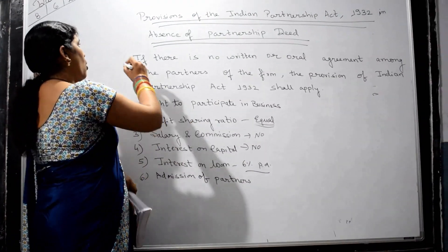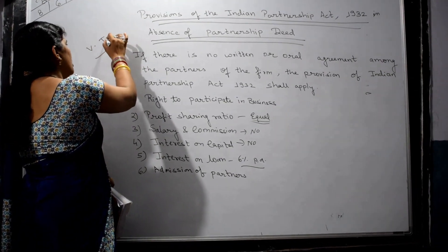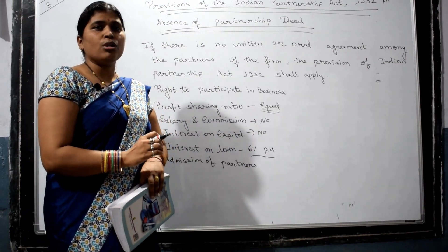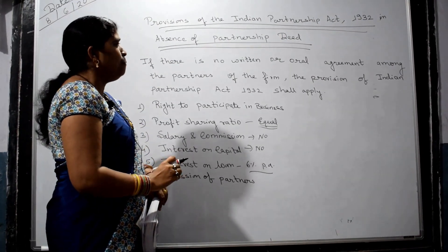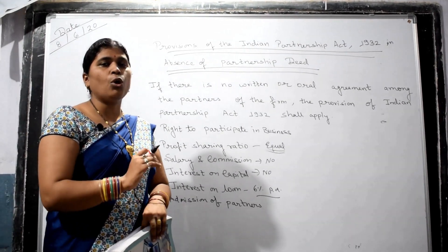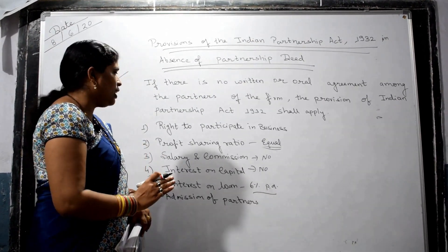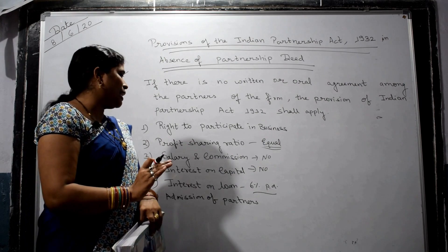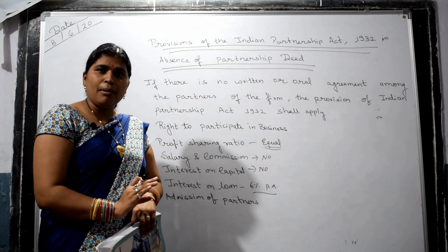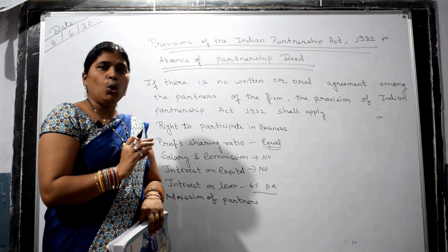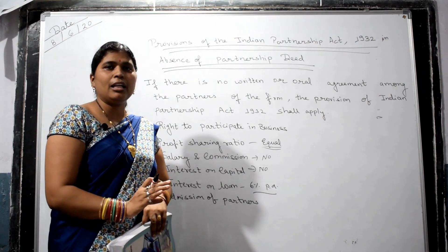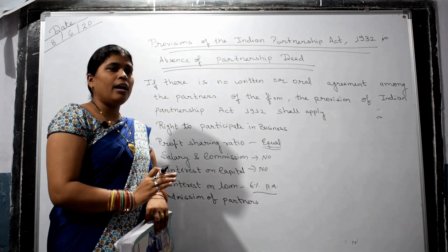This question is very important — you have to study this very keenly. If the partnership deed is silent, absent, or there is no agreement, then we do not give any salary, we do not give any commission, profit is shared equally, interest on loan is 6%, interest on capital is not given, and interest on drawings is not charged to any partner.